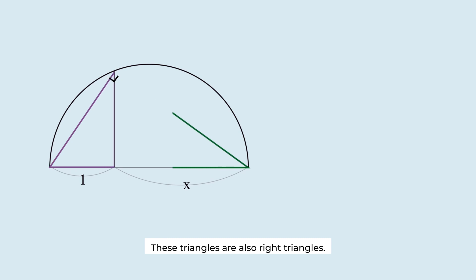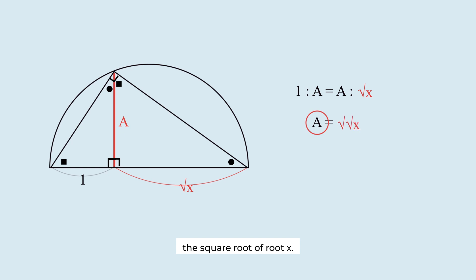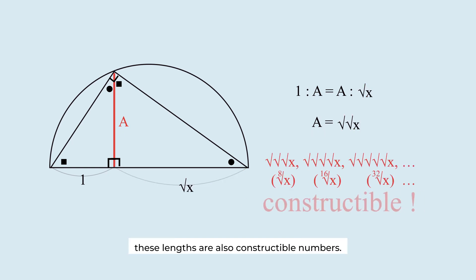These triangles are also right triangles. And they are all similar. If we call this length A, we get the following proportion. A becomes root x. We have constructed root x. If this length were root x, this length will be the square root of root x. By repeating this process, these lengths are also constructible numbers.